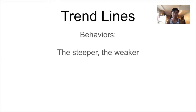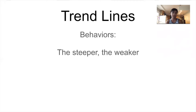It's pretty simple: the steeper, the weaker. All that means is the steeper the angle, the steeper the slope, the weaker that trend line is going to hold up. So if you see a super steep trend line and price is about to touch it, chances are it's going to break through it. If it's a more flat trend line with less of an angle, less of an incline, that trend line is stronger, so there's more chance price will bounce off it.